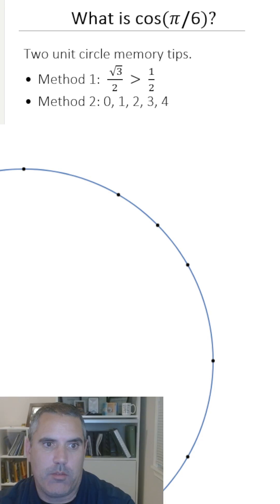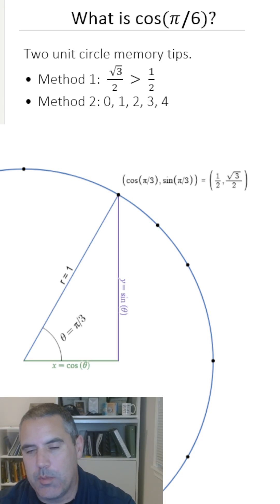You can use the same thing for the other one. Which one's bigger there? The y value is bigger, so sine is root 3 over 2. So that's my first tip. That's what I used to do as a student to remember. Now it's been burned into my brain.